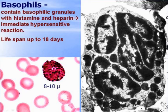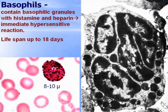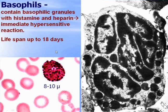Basophils are smaller but bigger than erythrocytes. They contain large basophilic granules. Under light microscope these granules mask the nucleus, but under electron microscope the nucleus is visible quite well — it is also segmented. These basophilic granules contain histamine and heparin. Histamine is responsible for immediate hypersensitivity reactions, allergic reactions. It stimulates inflammation, dilatation of small blood vessels, and increases the permeability of blood vessels. The lifespan is up to 18 days, mostly in tissues.